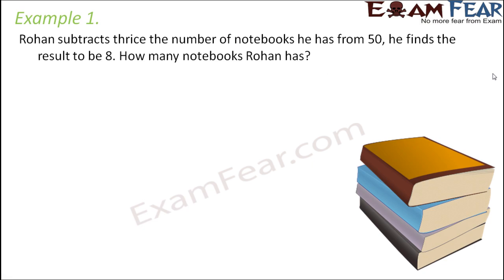Let us look at the first example. Rohan subtracts thrice the number of notebooks he has from 50 and finds the result to be 8. How many notebooks does Rohan have? First of all we need to set up the equation. We consider the value which we do not know as a variable. So what do we not know here? How many notebooks Rohan has. Let us assume the number of notebooks Rohan has is equal to x.